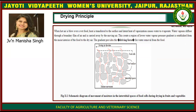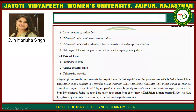Water vapor is diffused through a boundary film of air and is carried away by the moving air. This creates a water vapor pressure gradient established from the moist interior of the food to the dry air. The gradient provides the driving force for water removal from the food. Moisture moves in the food cells and interstitial spaces. When moving air flows outward, moisture movement is in the upward direction. Liquid movement occurs by capillary force, diffusion of liquids caused by concentration gradients, diffusion of liquids absorbed in layers at the surfaces of solid components, and water vapor diffusion in air spaces caused by vapor pressure gradients.